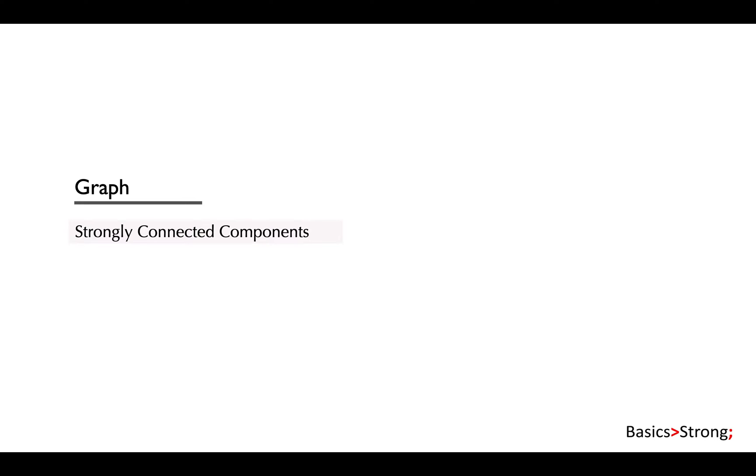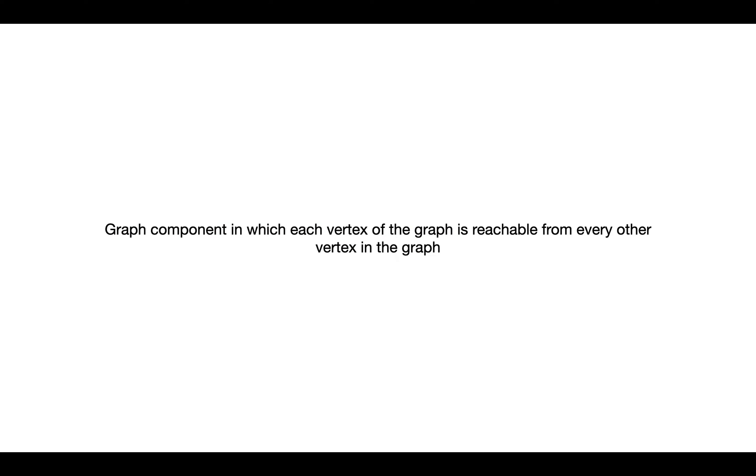So what is a strongly connected component? In a directed graph, strongly connected components are those components in which each vertex of the graph is reachable from every other vertex in the graph. That means a path would exist between each pair of nodes.